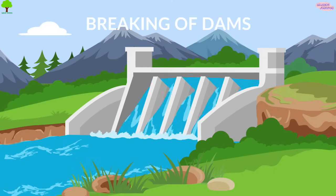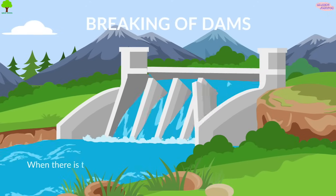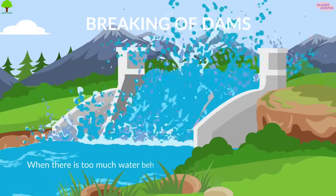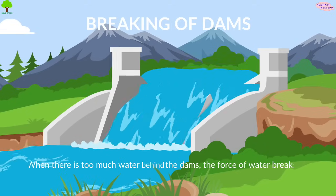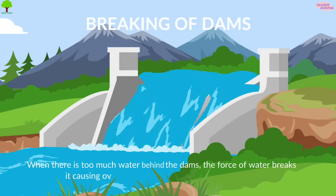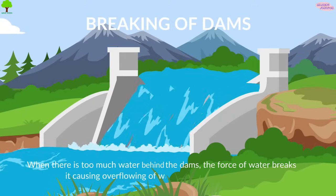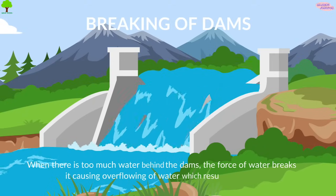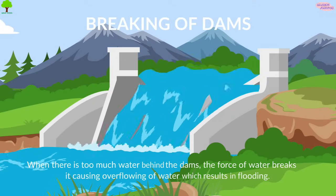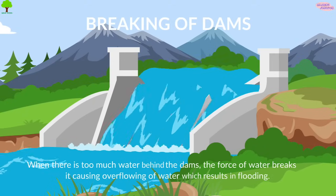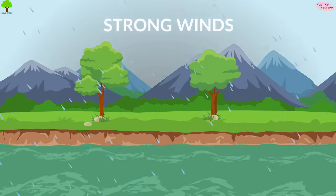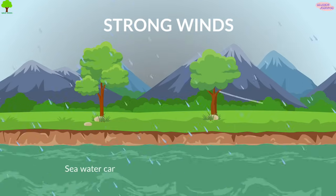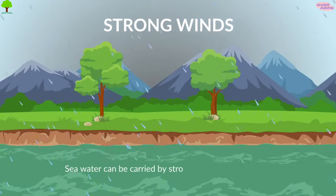Breaking of dams: when there's too much water behind a dam, the force of water breaks it, causing overflowing of water which results in flooding.